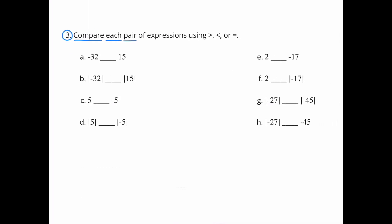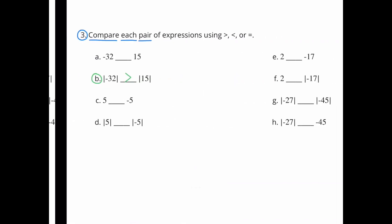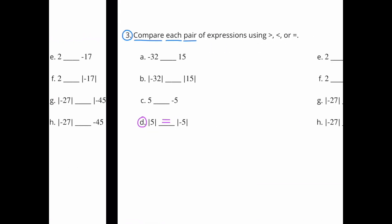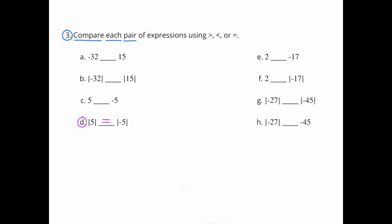Question 3: Compare each pair of expressions using greater than, less than, or equal to. A: Negative 32 is less than 15. B: The absolute value of negative 32 is greater than the absolute value of 15. C: 5 is greater than negative 5. D: The absolute value of 5 is equal to the absolute value of negative 5. E: 2 is greater than negative 17. F: 2 is less than the absolute value of negative 17.